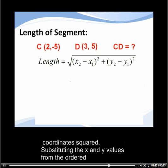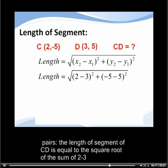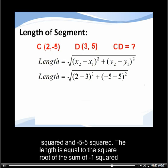Substituting x and y values from the ordered pairs, the length of segment CD is equal to the square root of the sum of (2 - 3)² and (-5 - 5)².